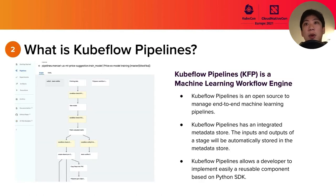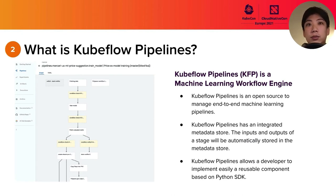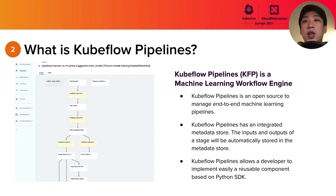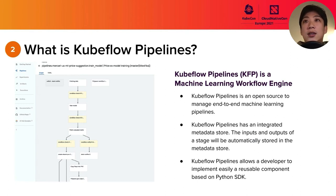Next is Kubeflow Pipeline. Kubeflow Pipeline is a well-known open-source workflow engine especially for machine learning workflows. Compared to other workflow engines, Kubeflow Pipeline has a metadata store. With the metadata store, Kubeflow Pipeline stores the outputs of each stage, so we can store what parameters were used in the training step and the results of evaluation steps. Kubeflow Pipeline UI has a feature to visualize those metrics, so we can visualize the confusion matrix of the evaluation step on the web UI.